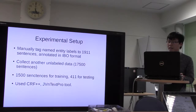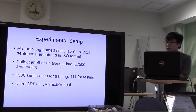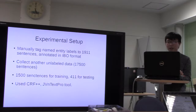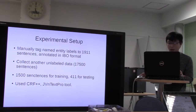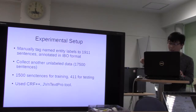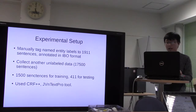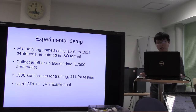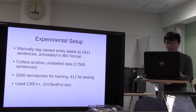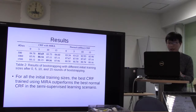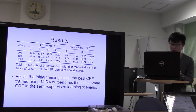For the experiment data, they manually labeled named entity labels for 1,019 sentences, annotated in the IOB format. They also collected unlabeled data of about 17,500 sentences. They used 1,500 sentences for training and 400 for testing, and used CRF++ and JVnSegPro for word segmentation.